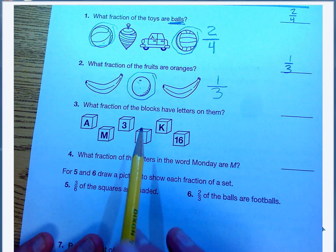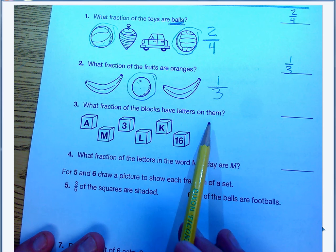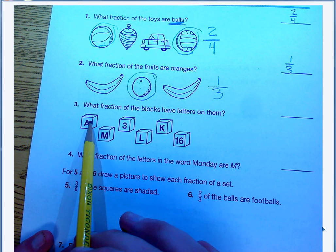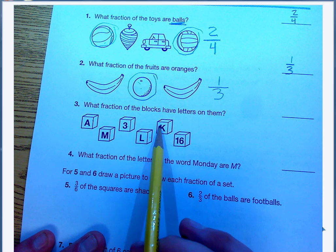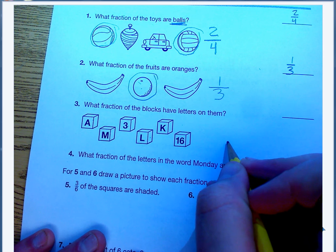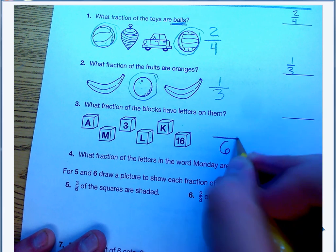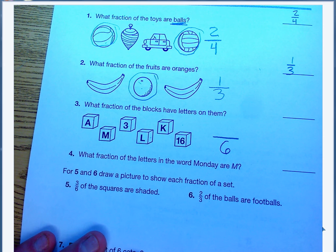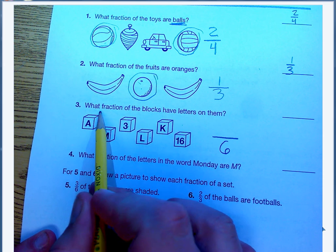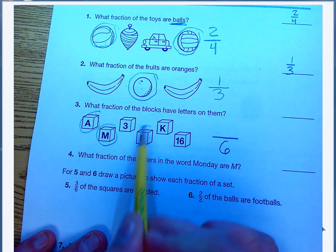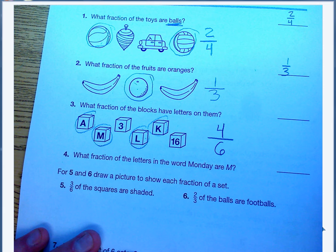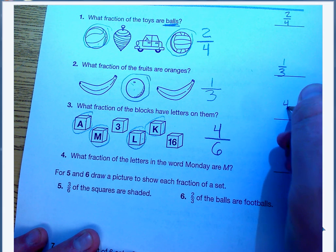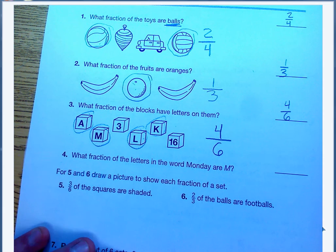Number 3 says, what fraction of the blocks have letters on them? First of all, figure out how many total do I have. 1, 2, 3, 4, 5, 6. I have 6 blocks total. That's going to be my denominator. And then how many of them have letters on them? 1, 2, 3, 4 out of 6 of my blocks have letters on them. So 4 sixths of my blocks have letters.